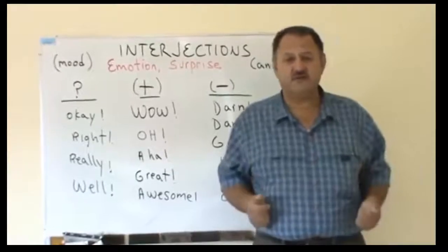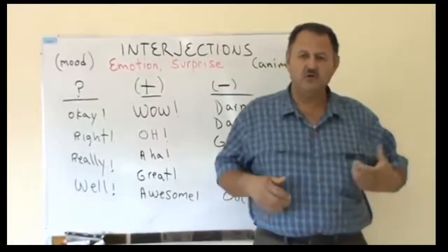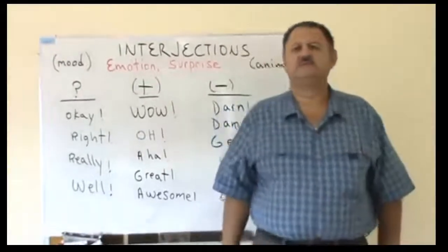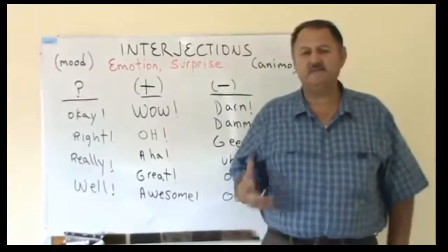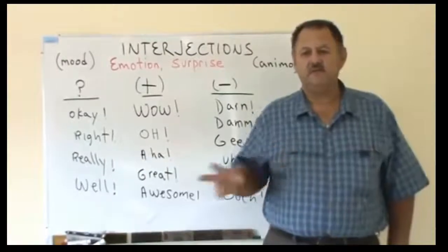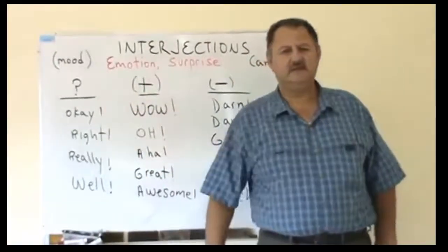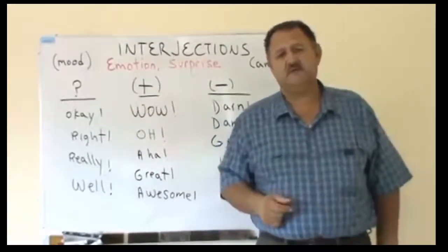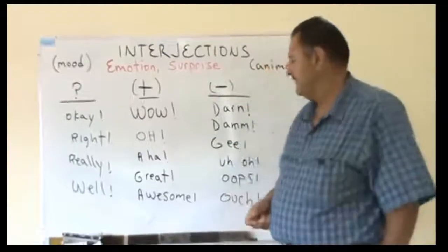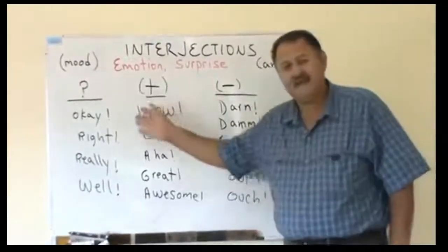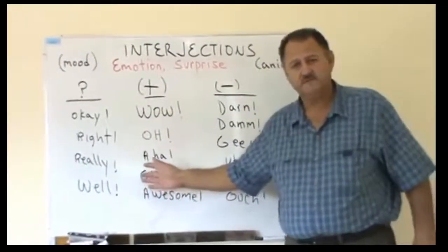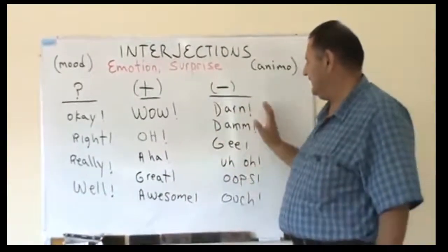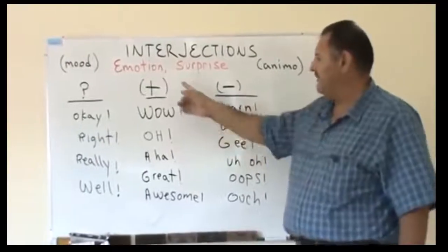All interjections express emotion. We have positive emotions, we have negative emotions, and sometimes we have dubious interjections because the action or feeling is uncertain. I put some examples here for you — we have positive ones and negative ones.